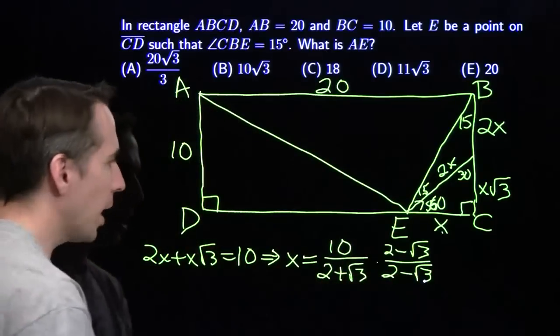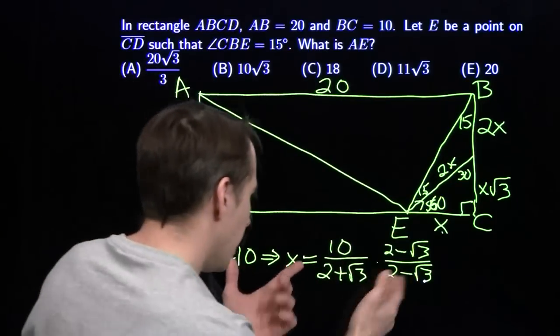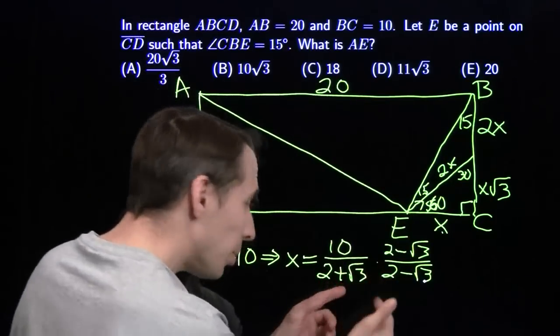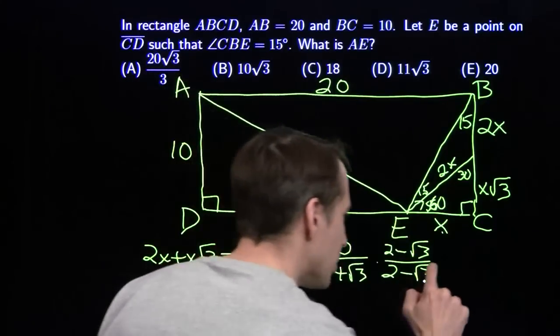Now we're multiplying at the bottom here. Well, 2 times 2. That's 4. 2 times the minus root 3. That's minus 2 root 3. Plus 2 root 3. They go away. That's nice. That was the plan all along. And then we have plus root 3 times minus root 3. That's a minus 3. 4 minus 3 is 1. That's nice.